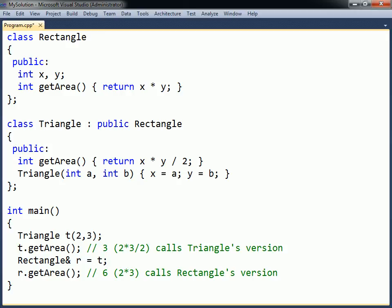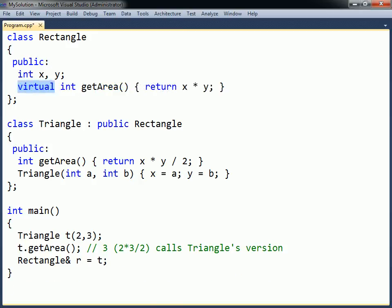In order to redefine a method upwards in the class hierarchy, what is called overriding, the method needs to be declared with the virtual modifier in the base class. This modifier allows the method to be overridden in derived classes. Calling the getArea method from Rectangle's interface will now invoke Triangle's implementation.